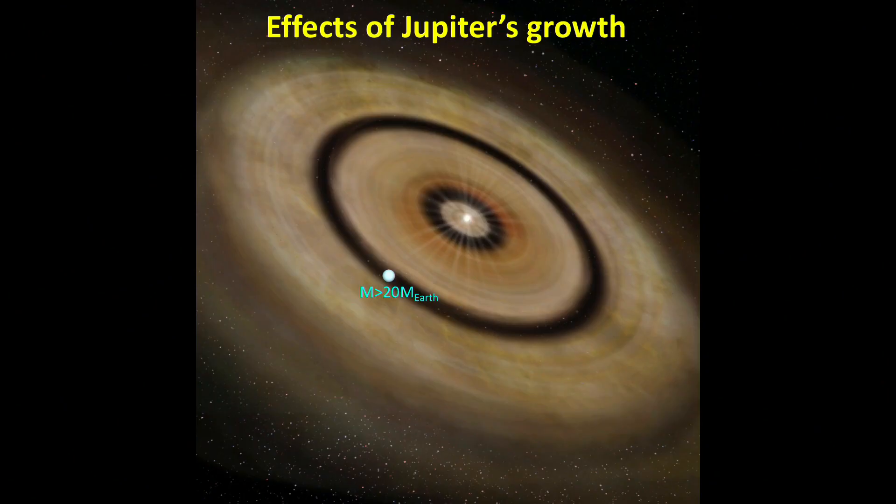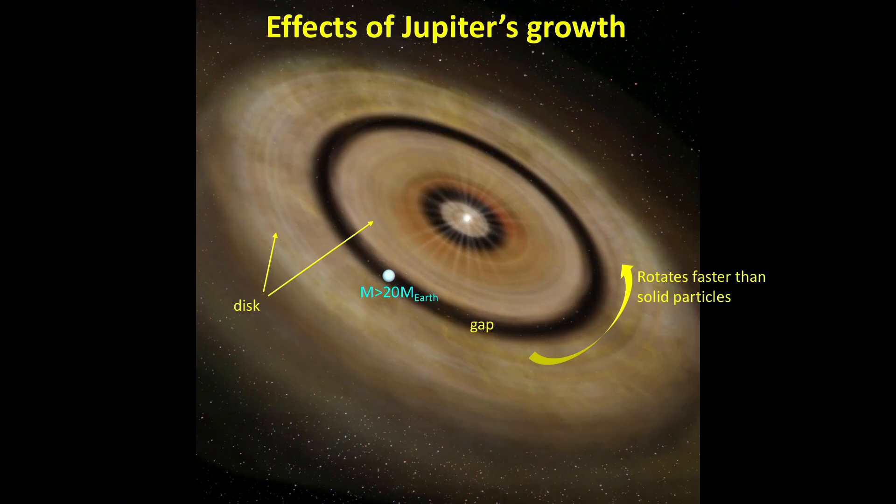Once Jupiter reaches a mass of about 20 Earth masses, it starts to carve a gap in the disk which divides the protoplanetary disk in two parts, the outer part and the inner part. But also, it accelerates the rotation of the gas in a narrow ring just outside the gap, and because gas there rotates around the sun faster than solid particles, it pushes the solid particles outwards by centrifugal force, whereas everywhere else in the disk, solid particles tend to move towards the sun because of gas drag.